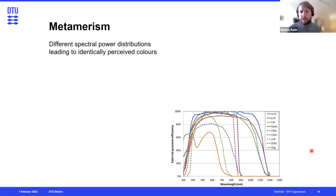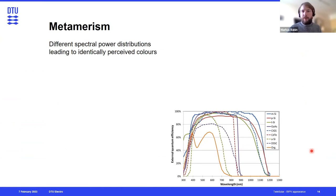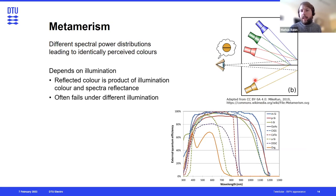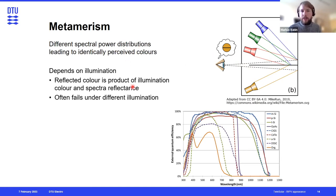I want to touch on a few more aspects of color generation, especially as they apply to BIPV. The first is metamerism. Because we only have three receptor types in the human eye, different spectra can lead to the same response. So if we have an object illuminated by either yellow light or a combination of LEDs with certain distributions, both might look completely the same, even though the measured reflectance spectra are different.